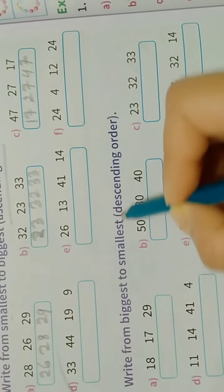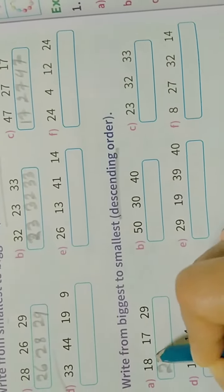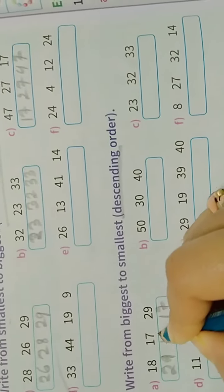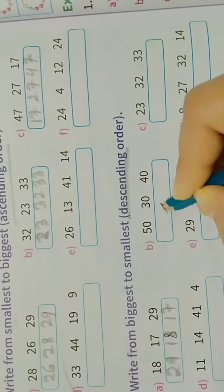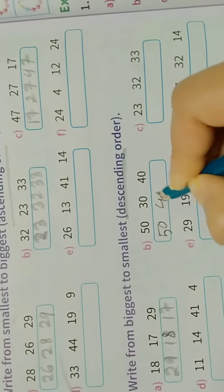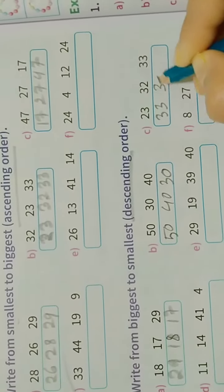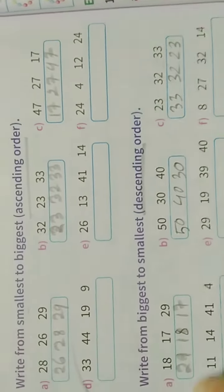Everybody, descending, that means biggest to smallest. The biggest, 29, then 18, then 17. The biggest is 50, then 40, then 33, then 32, then 23.